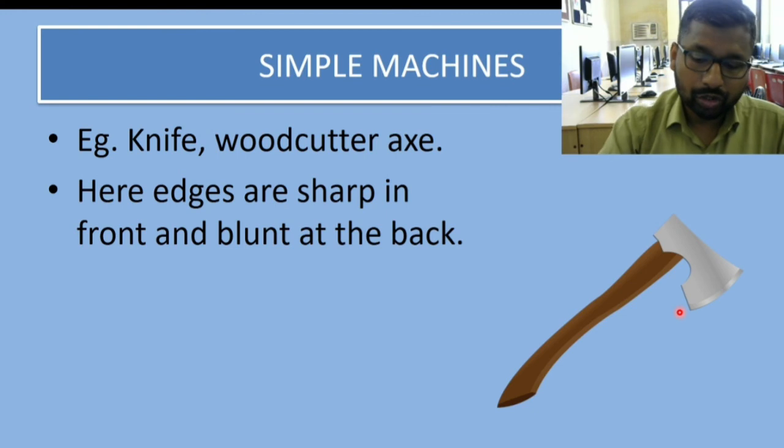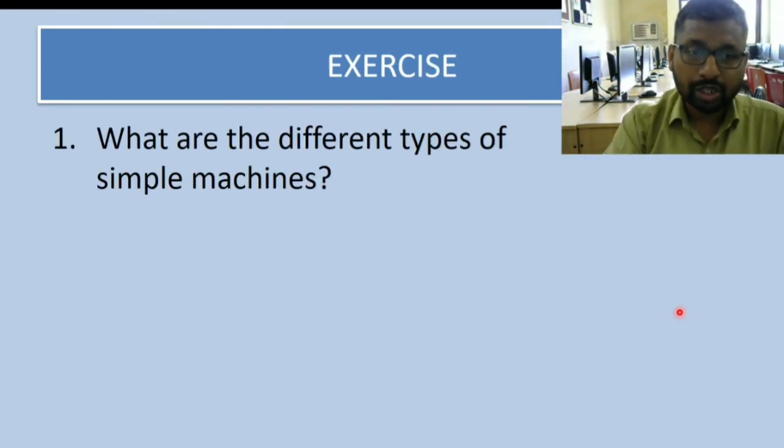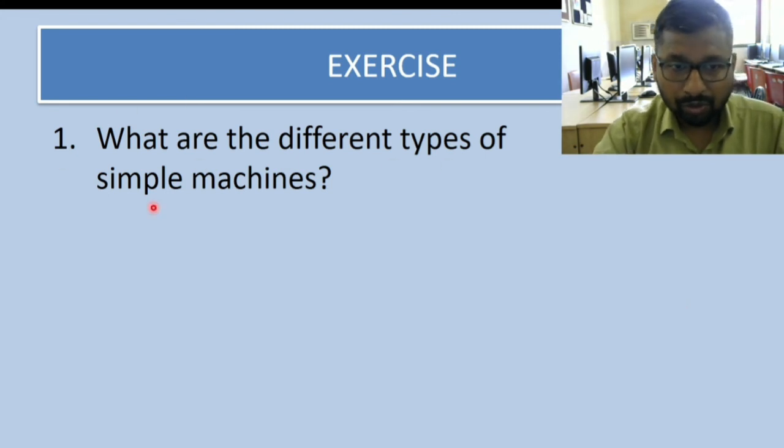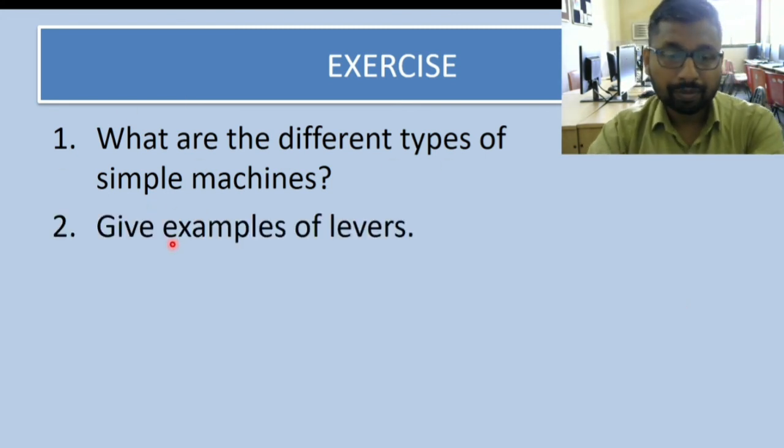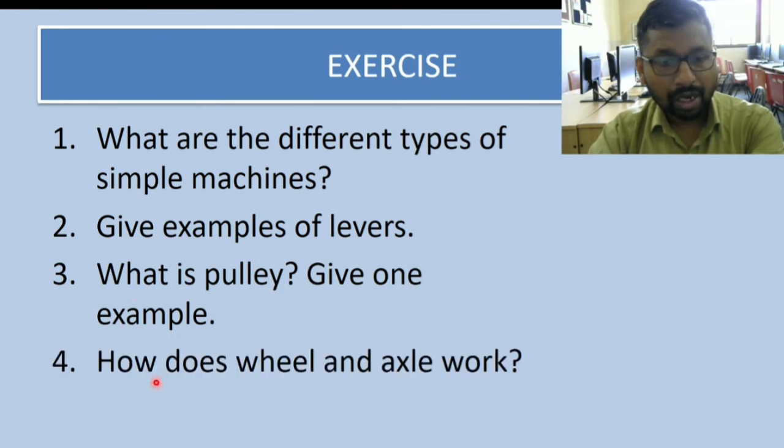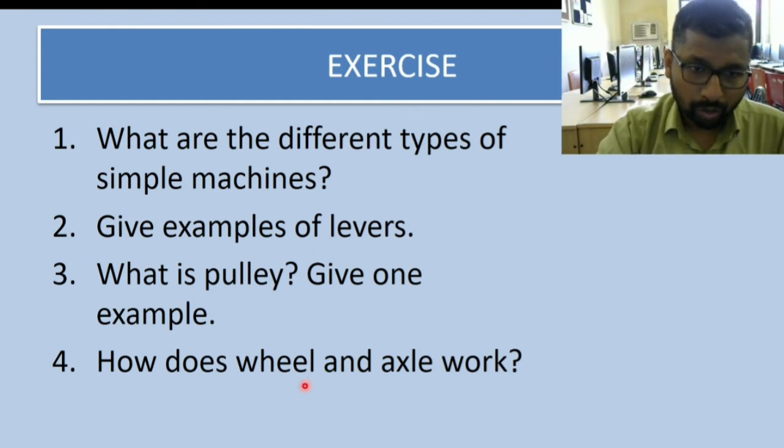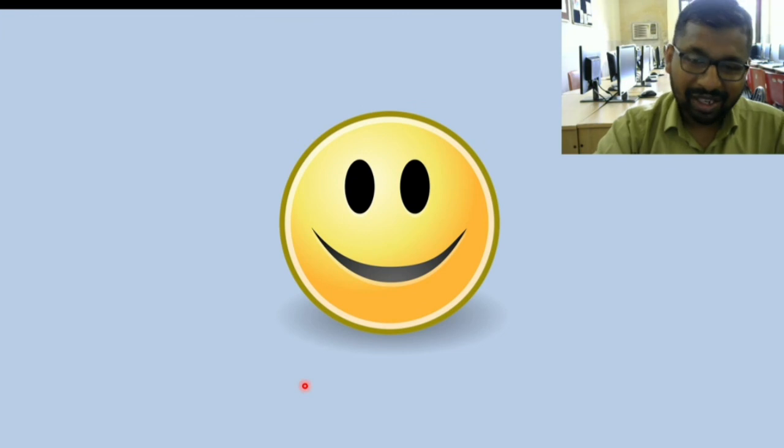That was all for today. These are some questions that you can solve at home: What are the different types of simple machines? Give examples of levers. What is a pulley? Give an example. How does wheel and axle work? These are four questions you can try at home. If you have any doubts, please feel free to ask me. Next time we will be discussing questions and answers from this chapter. See you during the next session. Until then, take care. Bye bye.